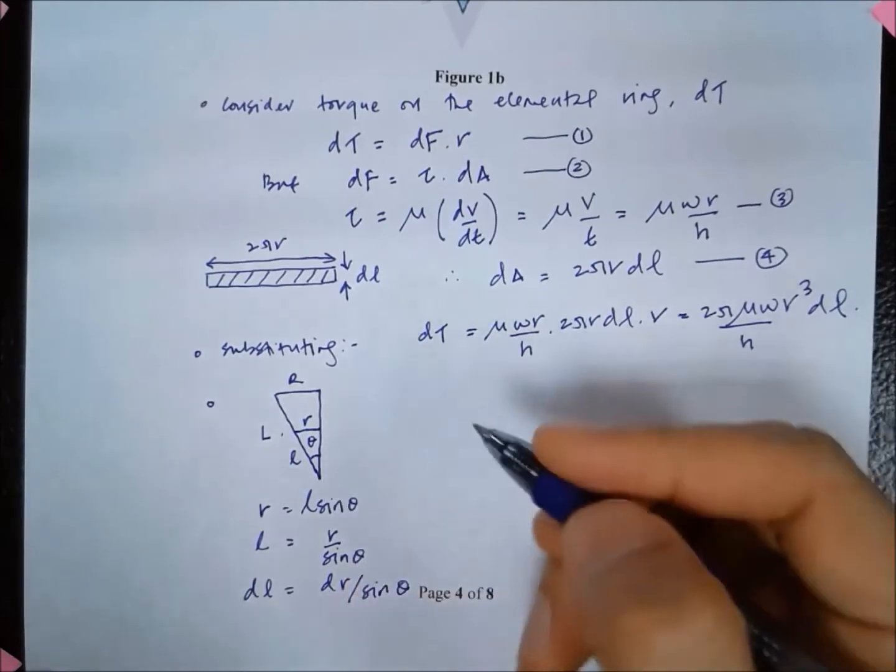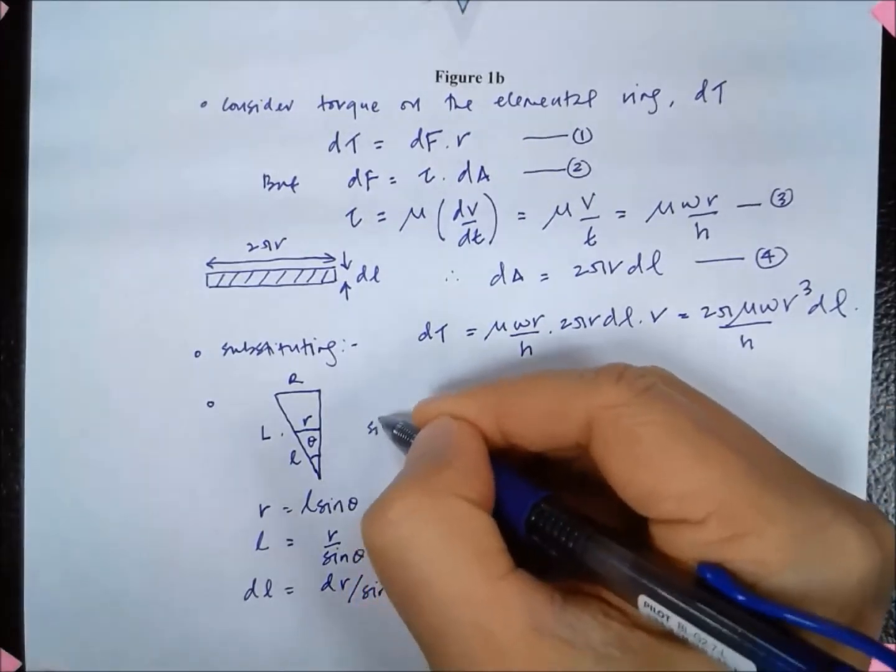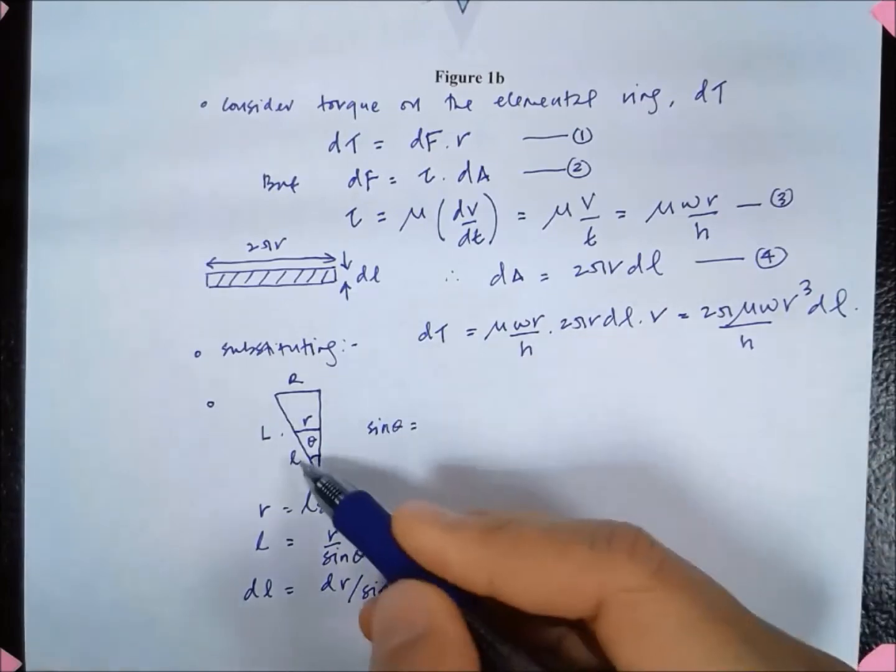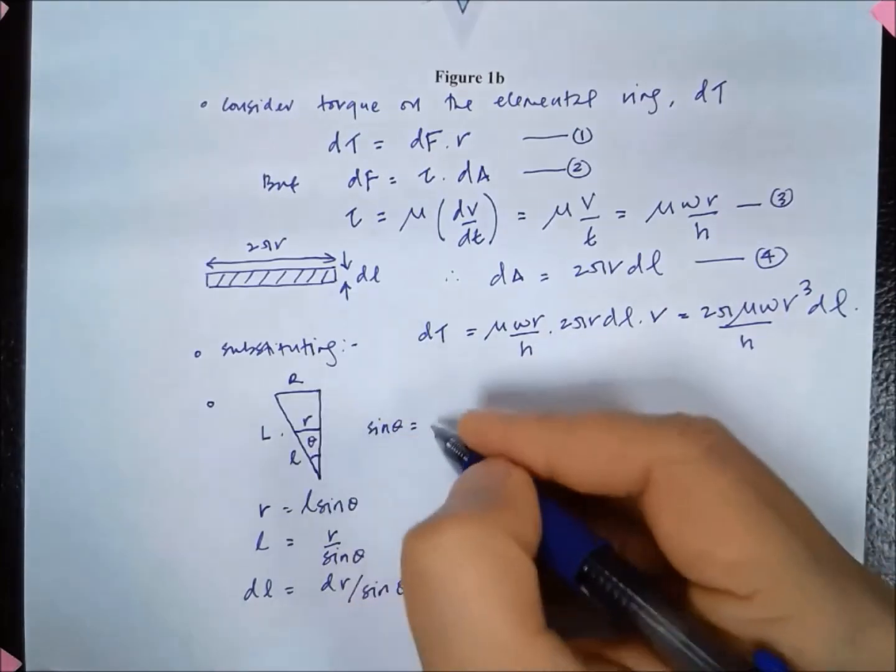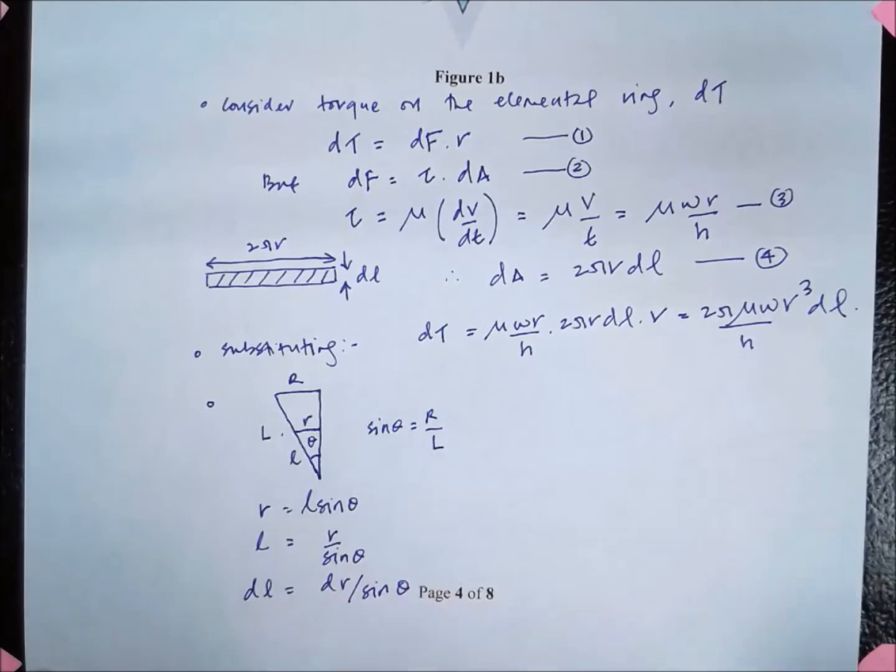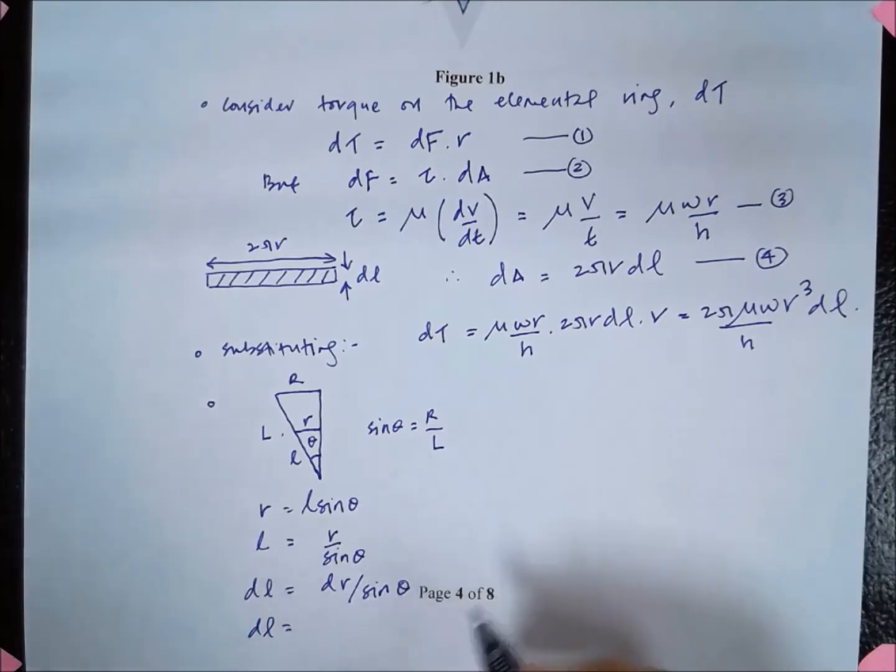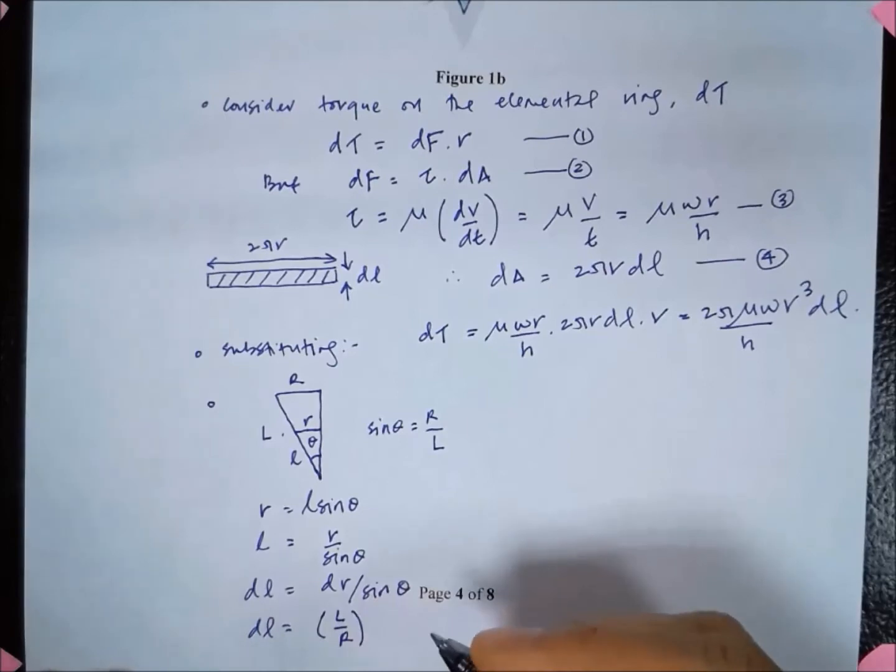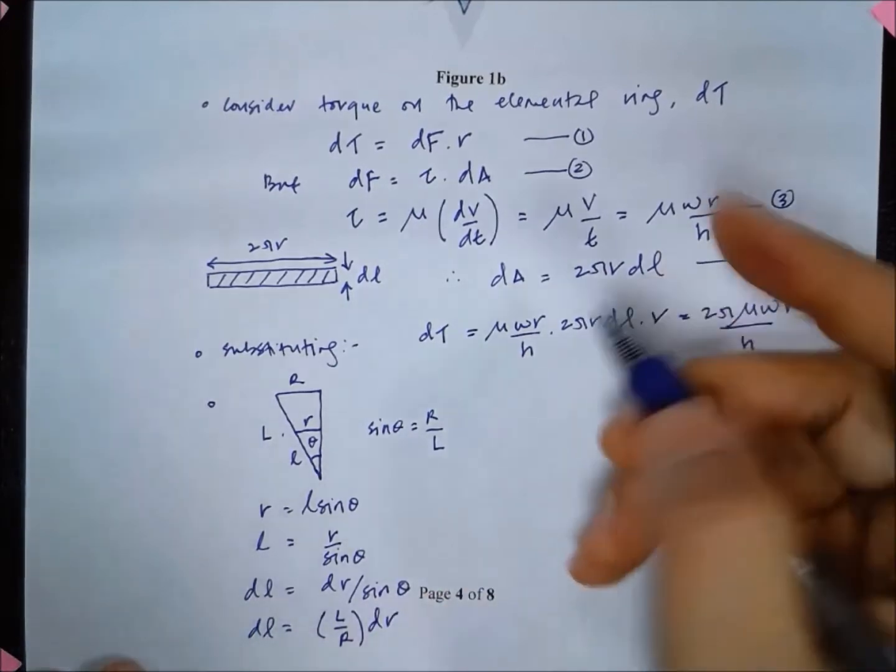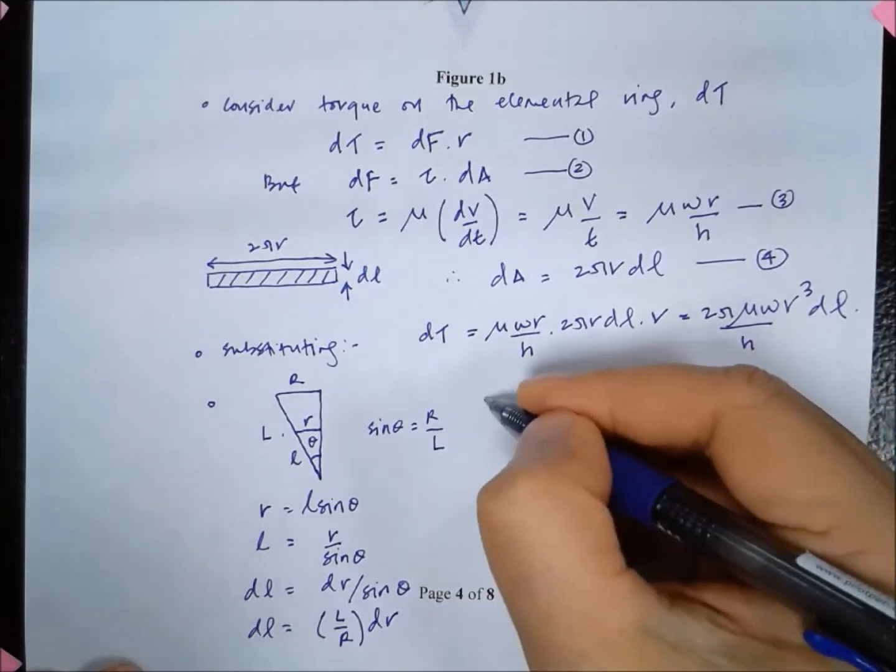But from here I know that sine theta is equal to r over l, which is big R over big L. So this gives me dl equal to L over R dr. So now I can substitute it back here.